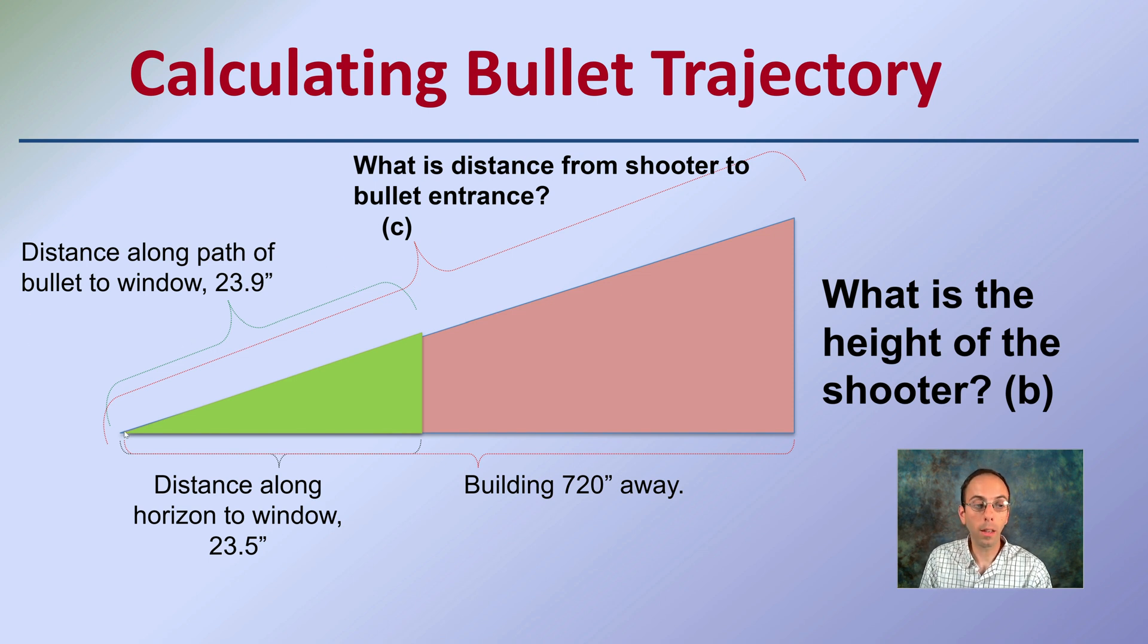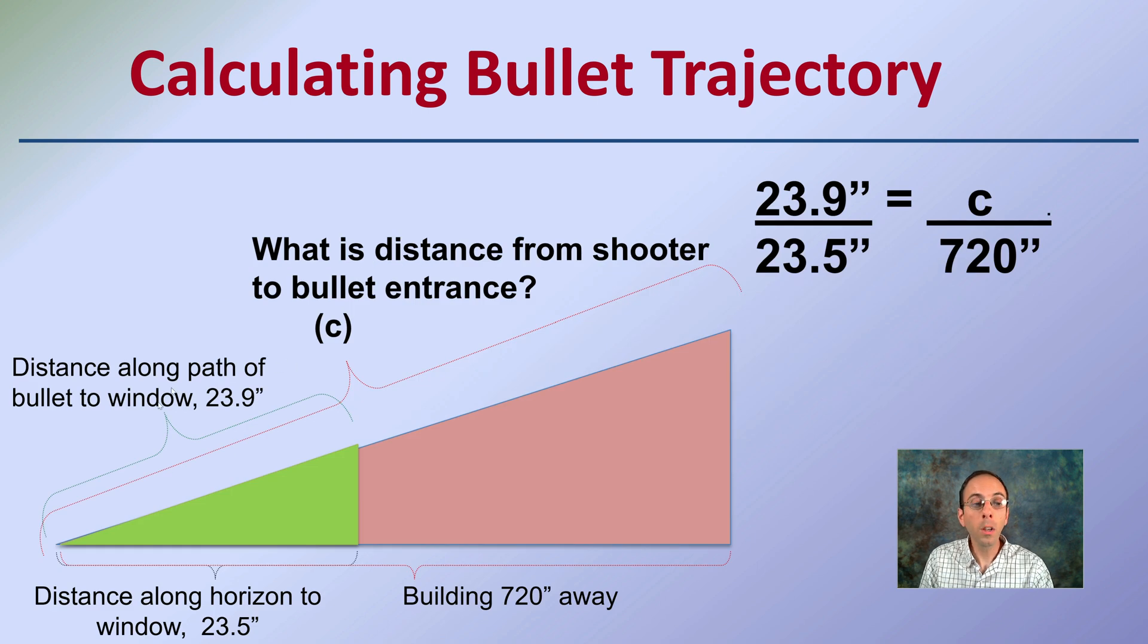What we want to know is c is the distance from here all the way to here - the distance from the shooter to the bullet entrance point. So how do we go about calculating that? We kind of have the two sides of this triangle, and that's going to be very important. So we take those two sides and we've got 23.9 over 23.5 is the same as or proportional to the distance of c, this distance, over 720.